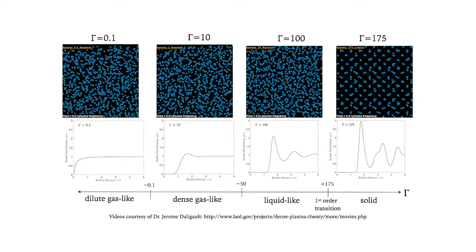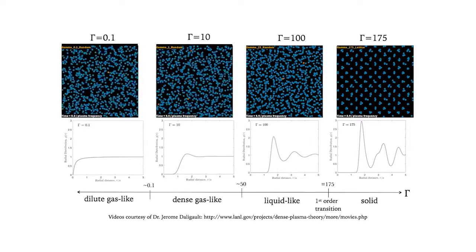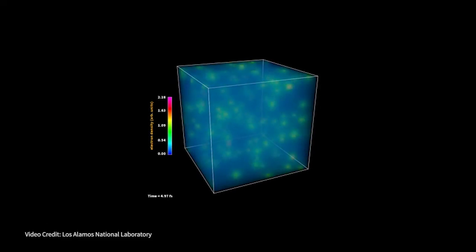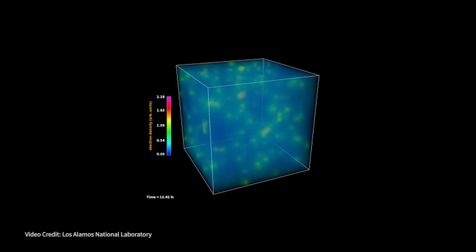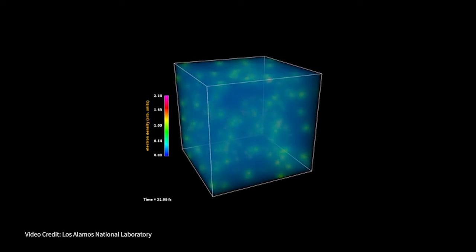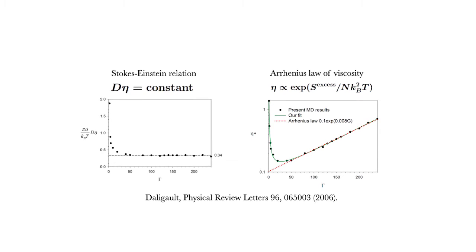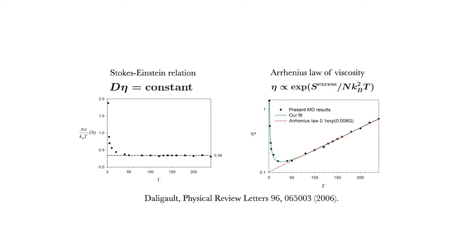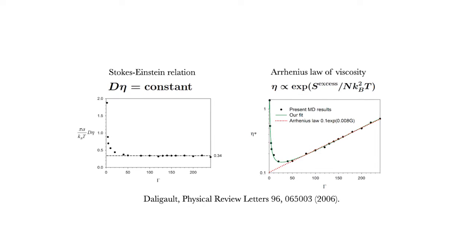In our group we primarily do analytic theory, and we use molecular dynamics simulations to test some of the assumptions that go into those models. We'll use these types of simulations to compute properties of the plasma, like the electrical conductivity or the viscosity, and then use those results to test how accurate our models are.